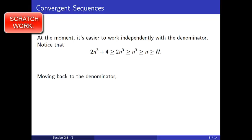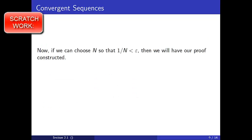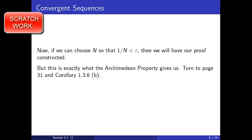Now we want to use this information to estimate the quantity 1/(2n³+4). Keep in mind that when we invert both sides of an inequality, the sign reverses. Thus, all of the greater-than-or-equal-to signs change to less-than-or-equal-to signs, and we have: 1/(2n³+4) ≤ 1/(2n³) ≤ 1/n³ ≤ 1/n ≤ 1/N, as long as n ≥ N. Now, if we can choose N so that 1/N < epsilon, then we will have our proof constructed. But this is exactly what the Archimedean property gives us. Turn to page 31 and Corollary 1.3.6b. From this, we see that if epsilon is positive, then we can choose a natural number N with 1/N < epsilon.